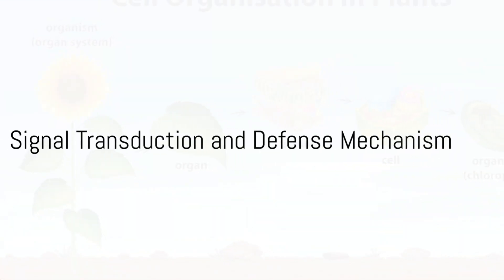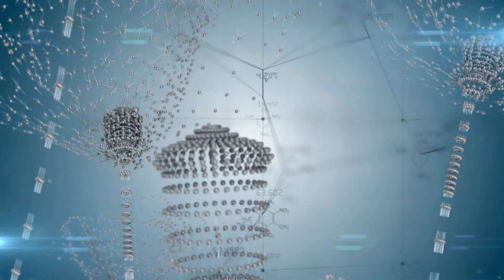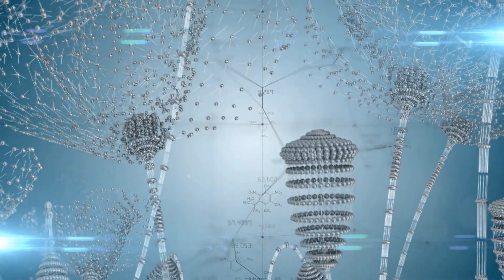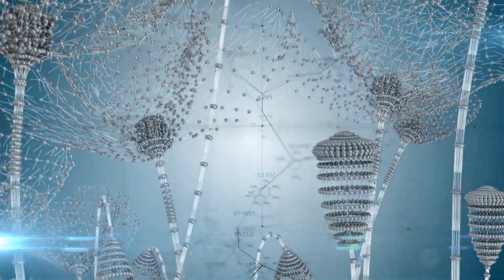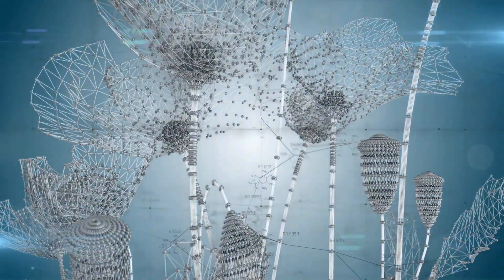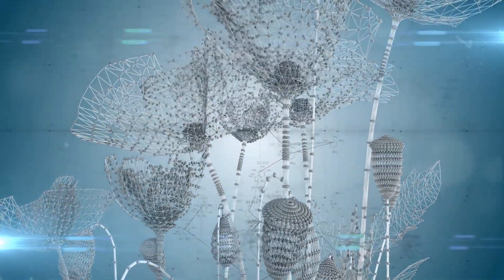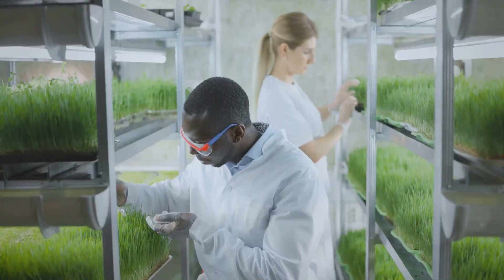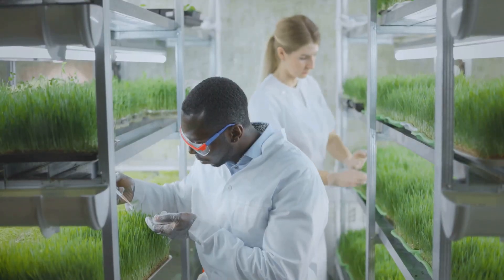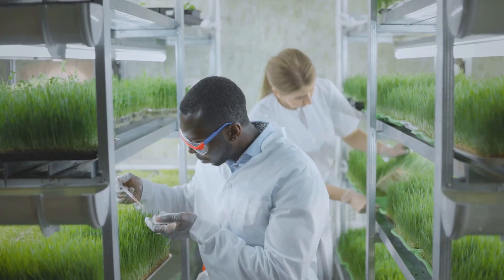And how does SAR orchestrate this complex defense mechanism? Through signal transduction, which is mediated by a complex signaling network involving various signaling molecules. These include salicylic acid, jasmonic acid, and ethylene. These signaling pathways work together to coordinate the plant's defense response.